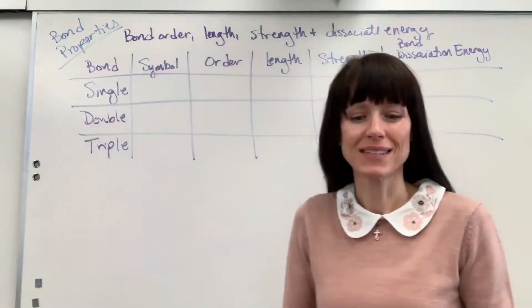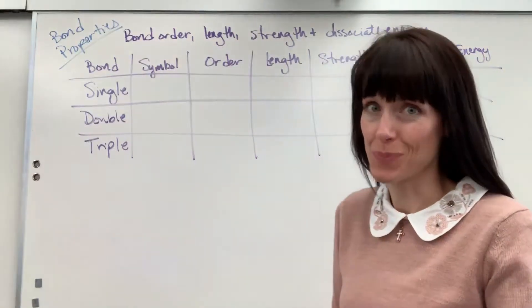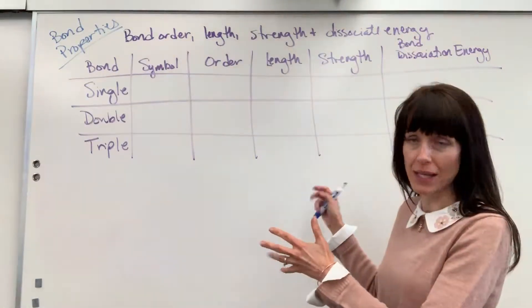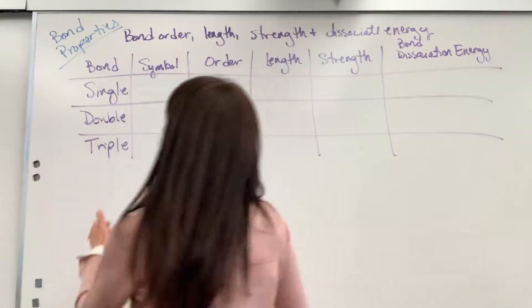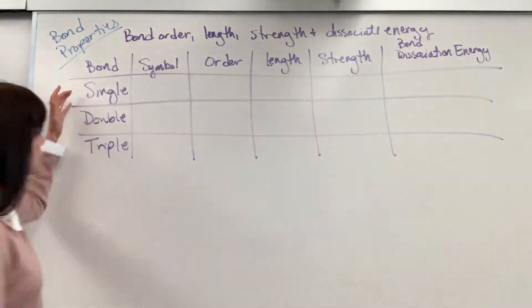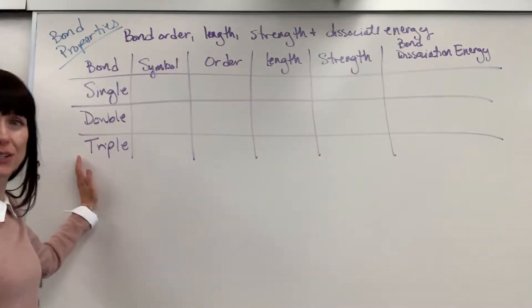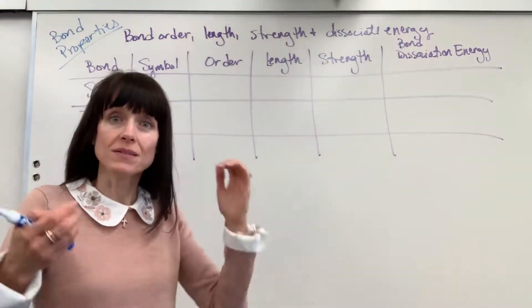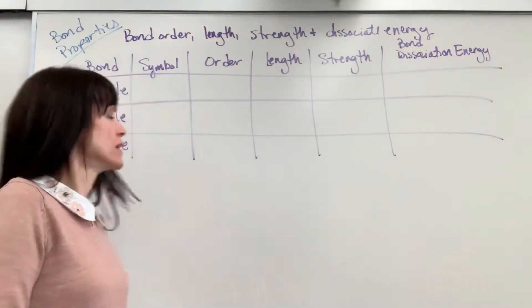We're going to talk about bond properties. I set up my table here. We're going to talk about single, double, and triple bonds, and these are covalent bonds — the sharing of electrons.